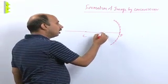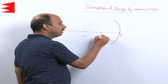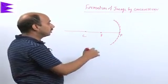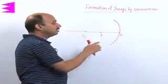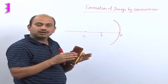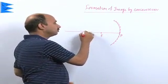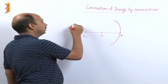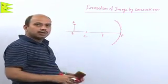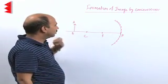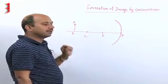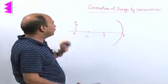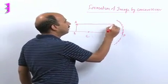At the midpoint exactly, we take the focal point, as we have discussed earlier — the focal point is just in between the pole and center of curvature. Suppose you have taken an object here; this is AB, an extended object which is beyond the center of curvature. Now we will take two rays from the top of the object, one parallel to the principal axis.